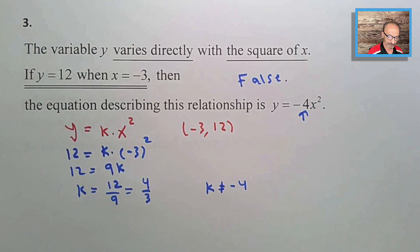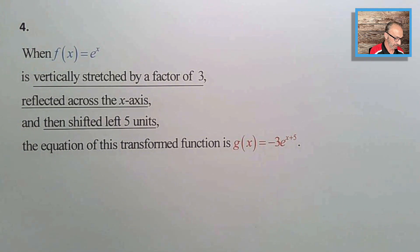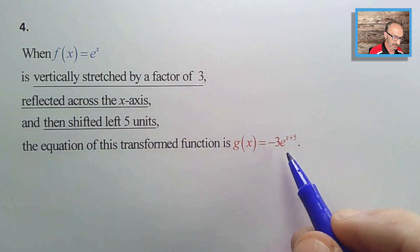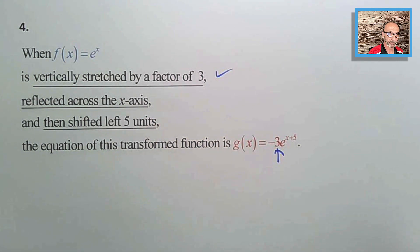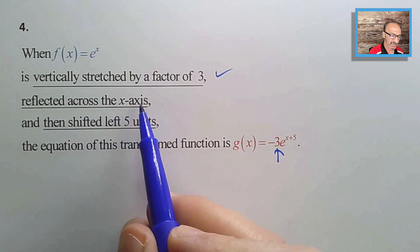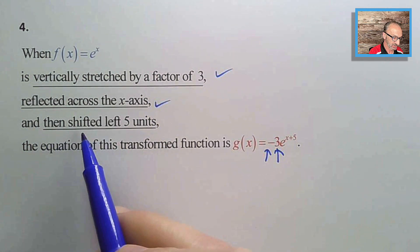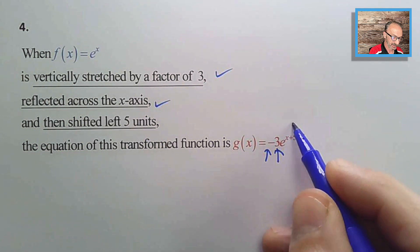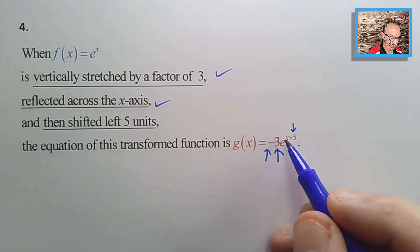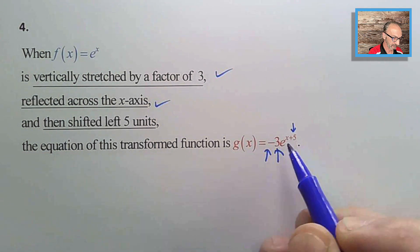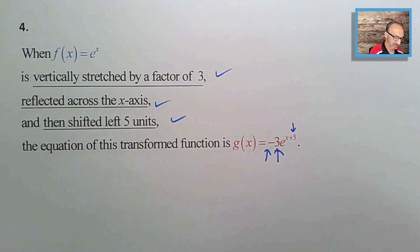Number four: when f(x) = e^x is vertically stretched by a factor of 3 (the 3 up front), reflected across the x-axis (the negative sign), and shifted left 5 units — x + 5 means going left 5 units — the statement is true.